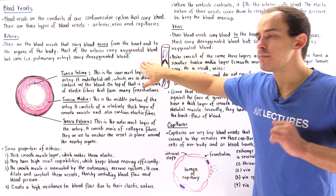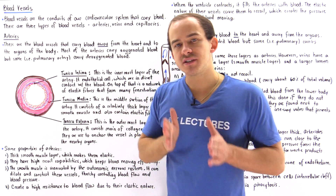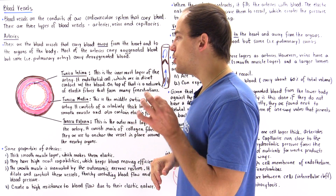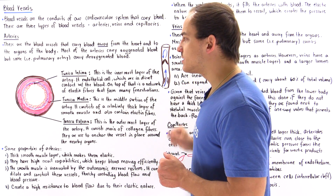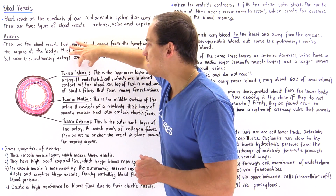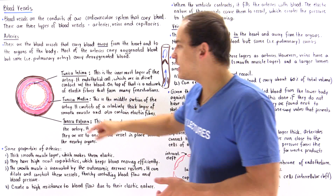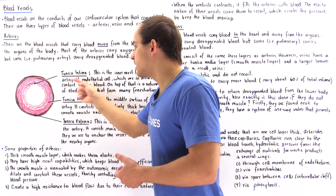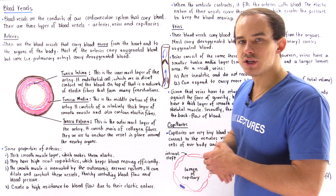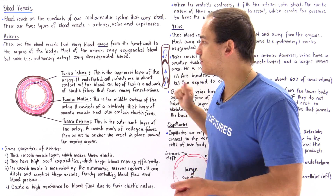Now what about the structure — the anatomy of our artery? Taking a cross section of the artery, we see that it consists of three different layers. We have the innermost layer, the tunica intima, where tunica means layer and intima means inner. We have the mid layer, the tunica media, and we have the outer layer, the tunica externa.